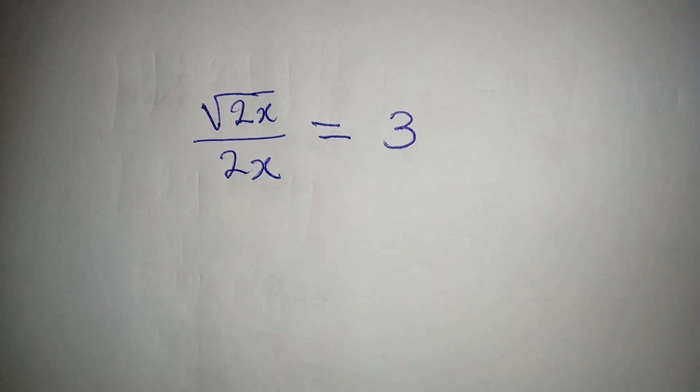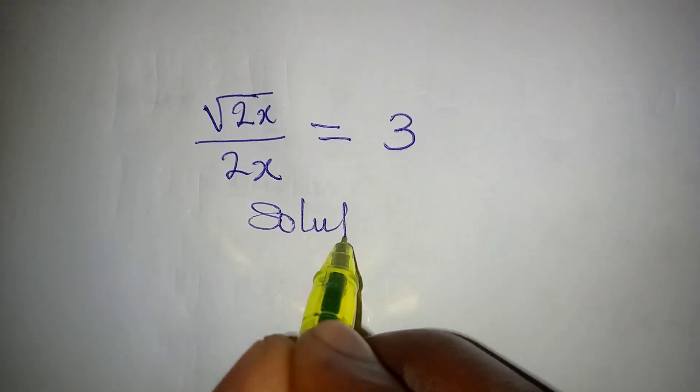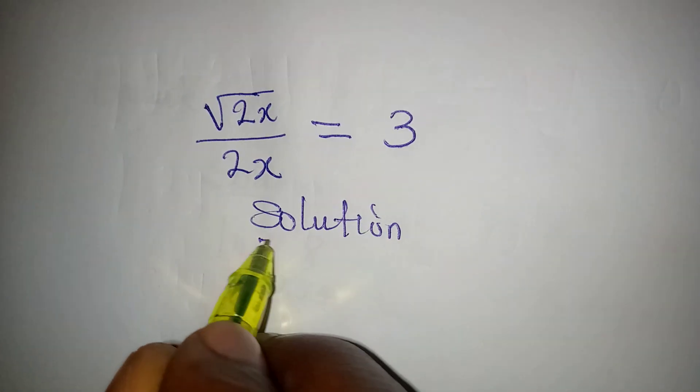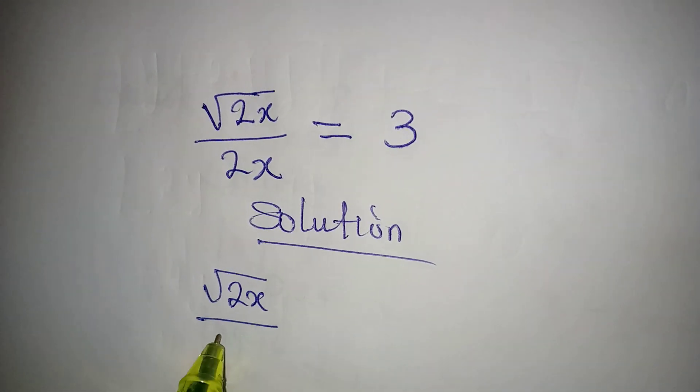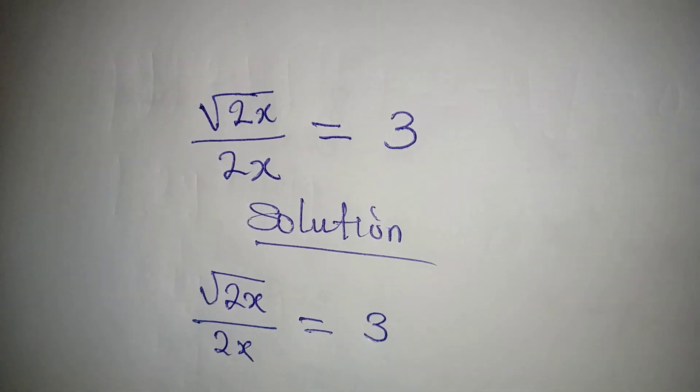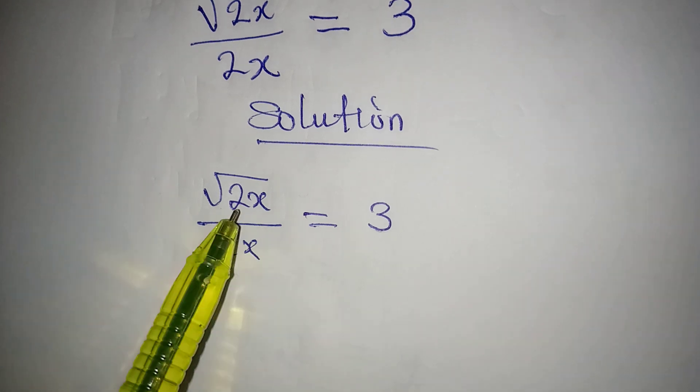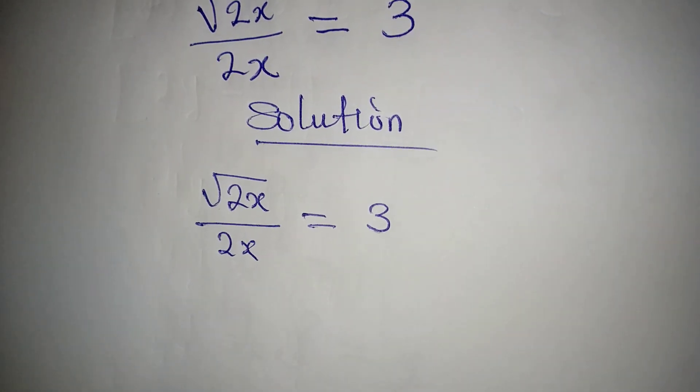Hello everyone, let's provide a solution to this problem very quickly. We have square root of 2x over 2x equal to 3. Now somebody may be tempted to cancel 2x and 2x, but that is not correct.